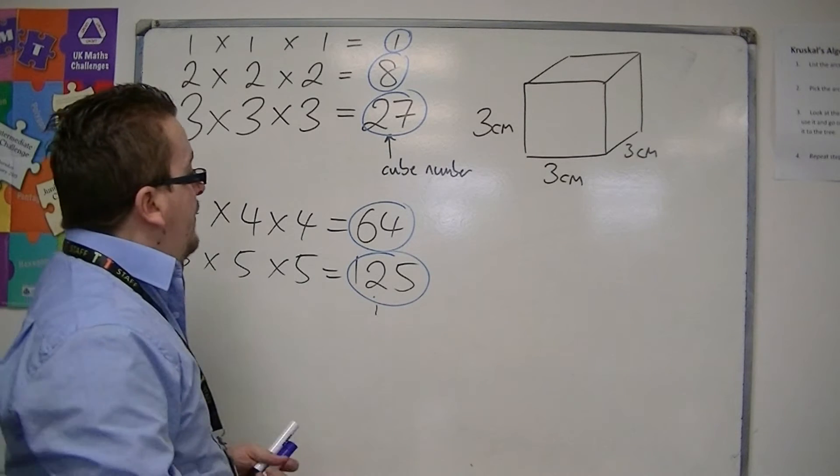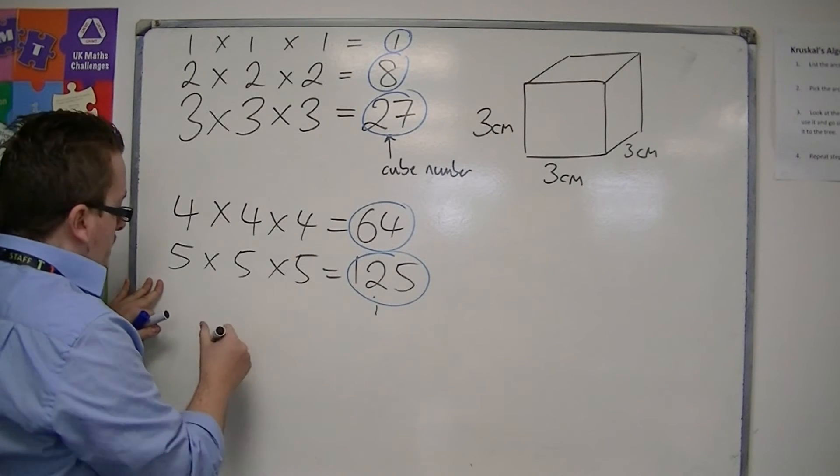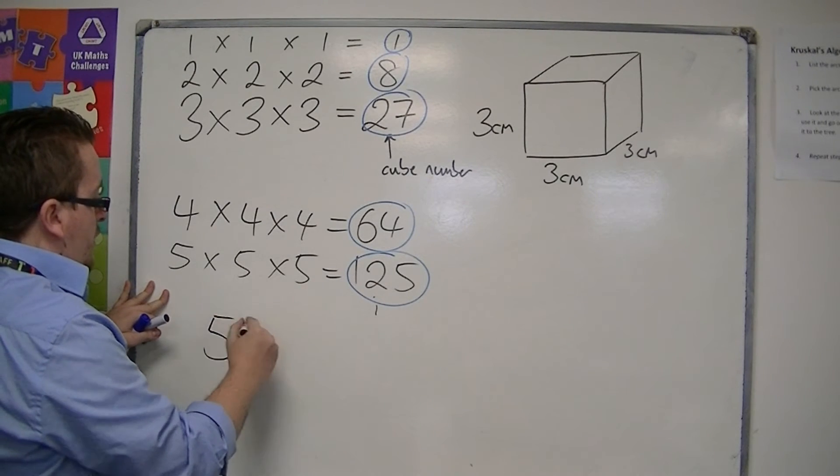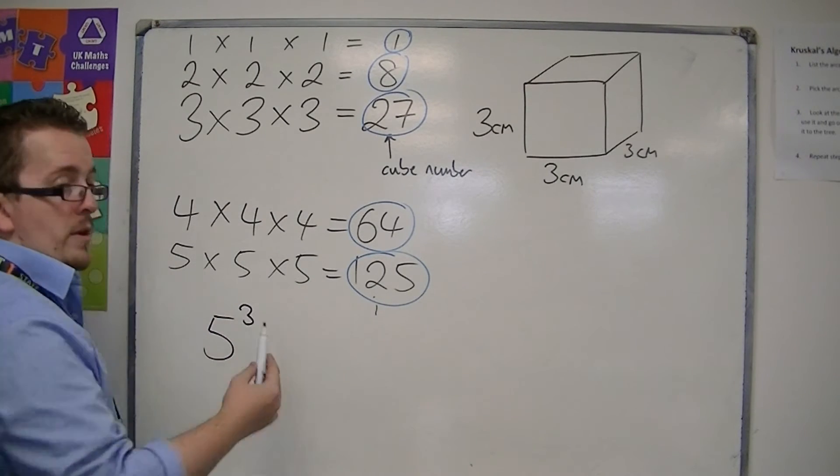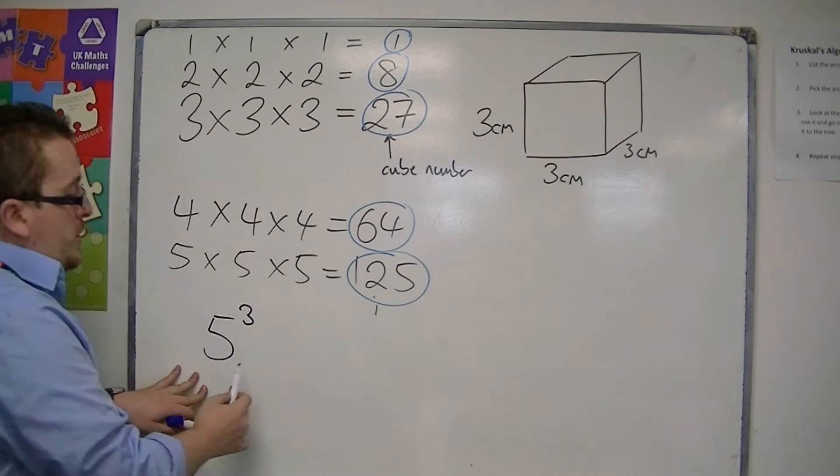How is it represented? Well, when you're multiplying 3 numbers that are the same, we could represent this as 5 cubed, and we write 3 as the power. So 5 to the power of 3 is exactly the same as 5 cubed.